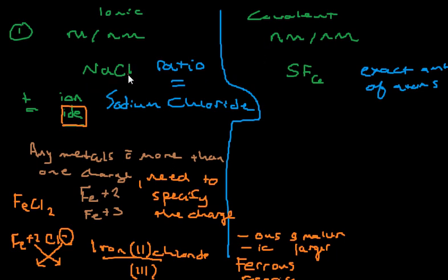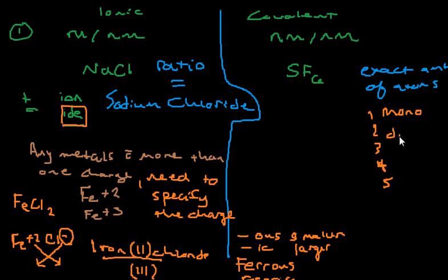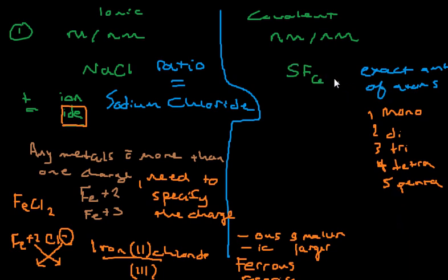That covers ionic naming conventions — now let's go to covalent. Life gets easier. With covalent compounds, it's real simple — you just need to memorize some prefixes. One is mono, two is di, three is tri, four is tetra, five is penta, six is hexa, seven is hepta, eight is octa, nine is nona, ten is deca. Most teachers have you learn up to ten; some go to twenty and some only to five — see what your teacher requires.